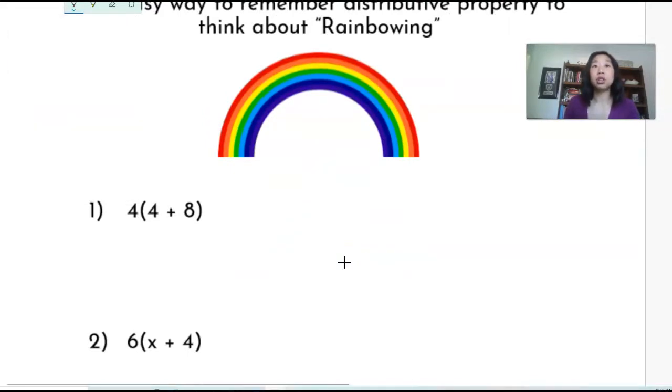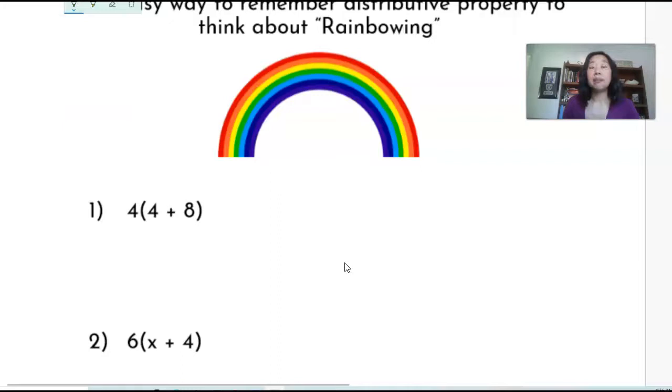So you're going to multiply. I'm going to use a different color here. You're going to multiply or rainbow the outside number with every single number inside the parentheses. So here we're going to do four times four is 16.